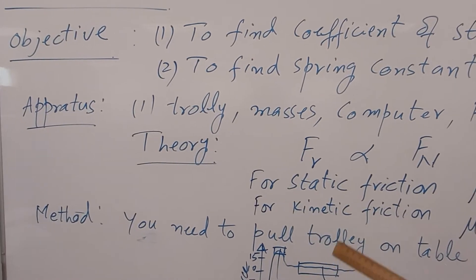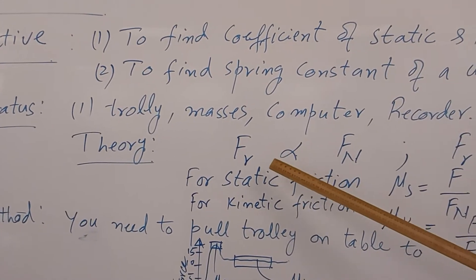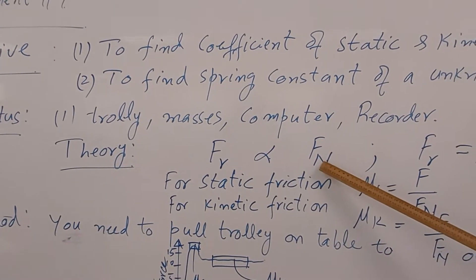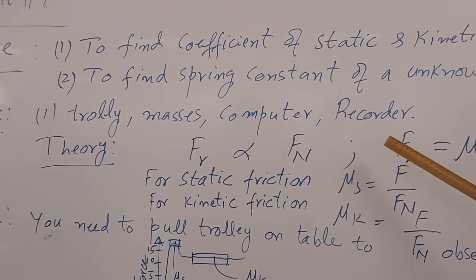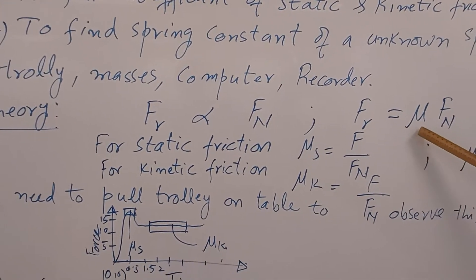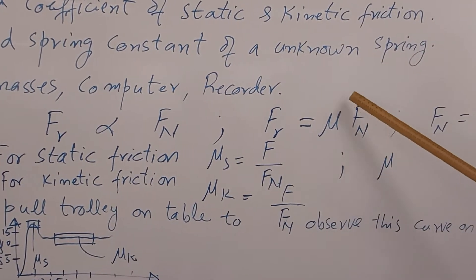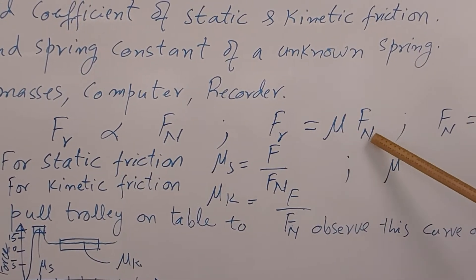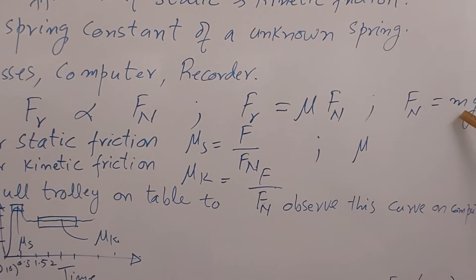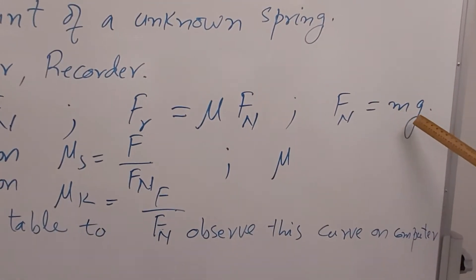The theory for this: as you know from your classroom, frictional force is directly proportional to the normal force. The equation is frictional force equals mu times FN, where mu is coefficient of friction. You know that normal force on the table is mg, so FN is mg.